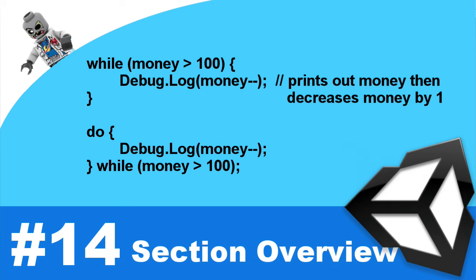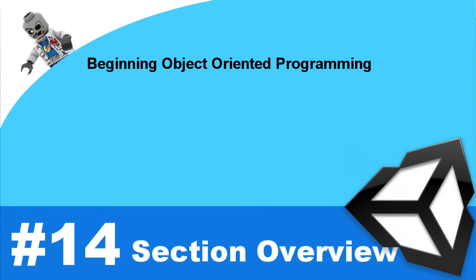Believe it or not, at this point you have all the knowledge necessary to make a game. Granted, the game may not be pretty, but you have all the tools to actually create a game in Unity. But there's a lot more to cover, and the big one is object-oriented programming. If you're new to object-oriented programming, have no fear — we're going to take it one step at a time. This next section is called 'Beginning Object-Oriented Programming'.